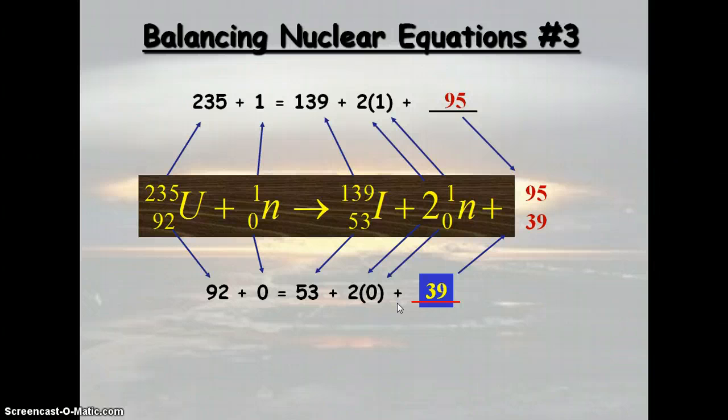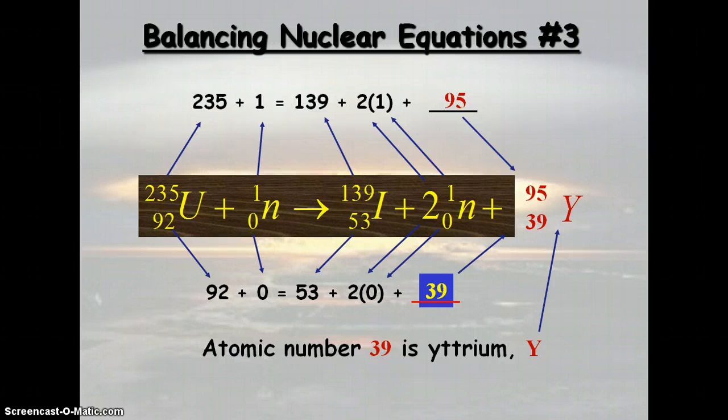Then we look on the periodic table for atomic number 39 and see that it is element Y, yttrium. And that's how you balance transmutation equations.